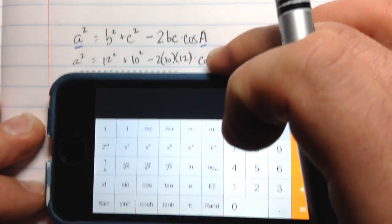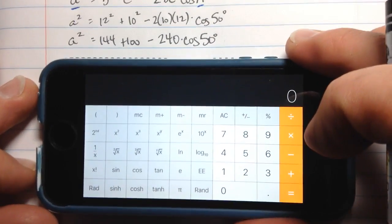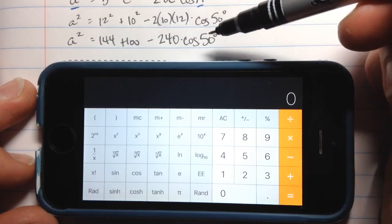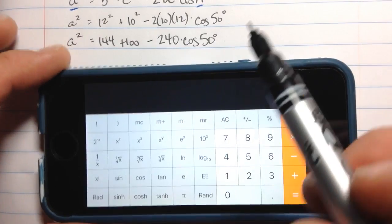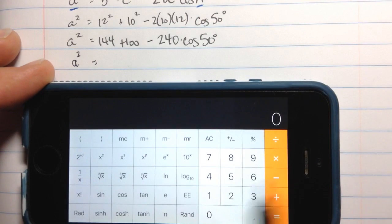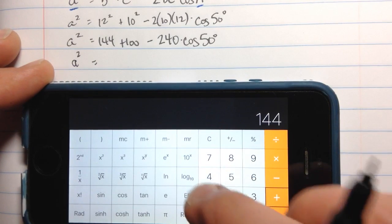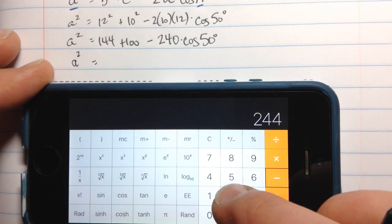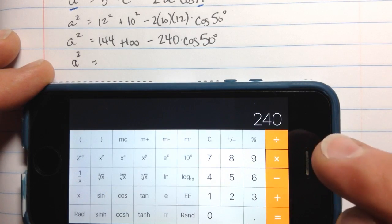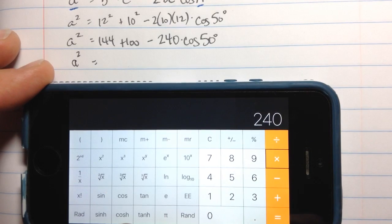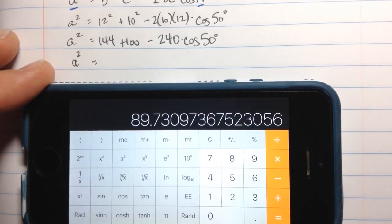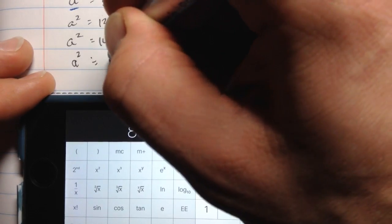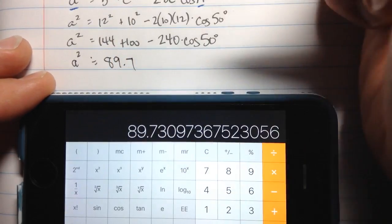Alright, let me grab my calculator. So this is a phone. This one is an immediate execution calculator, which means when I do this cosine, I'm going to have to type 50, and then press cos. Your calculator may have a different order. Let me just do this all at once here. 144, plus 100, minus 240, times, I'm going to type 50, and then cos. Now that's the cosine of 50. I press equals to finish everything off. It's about 89.7, and that's a squared.